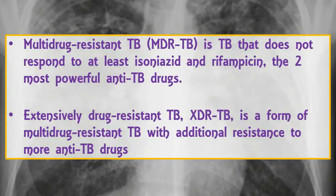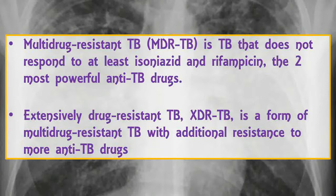More than 1.7 billion people — about 25% of the world population — are estimated to be infected with tuberculosis. Tuberculosis remains one of the leading causes of morbidity and mortality worldwide, and resistance to commonly used anti-tuberculous drugs is increasing.